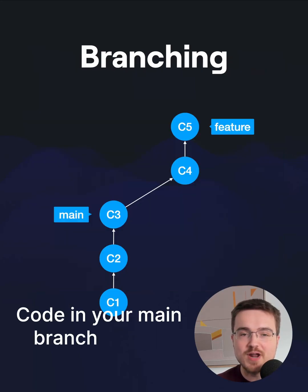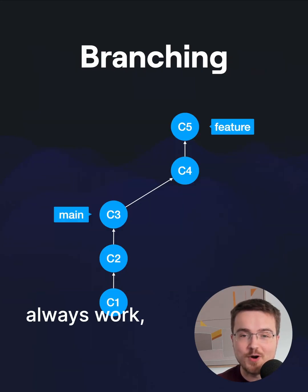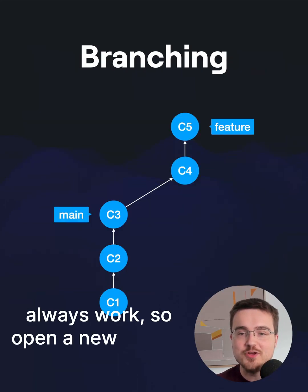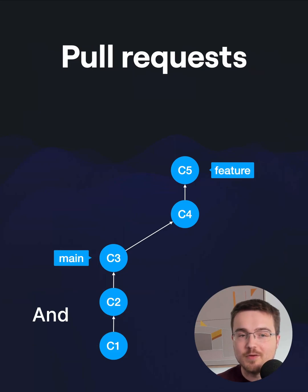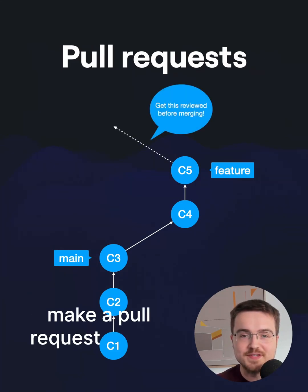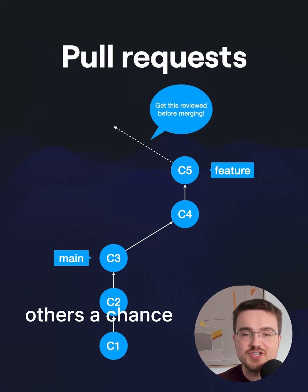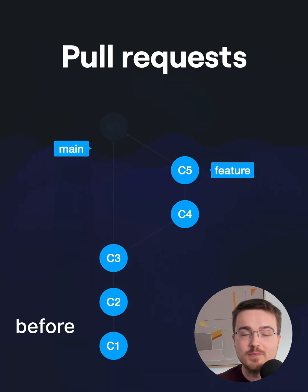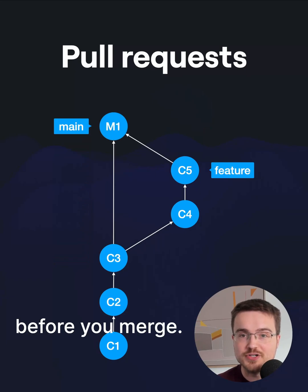Code in your main branch should always work, so open a new branch when working on something new. And once your branch is ready, make a pull request to give others a chance to take a look before you merge.